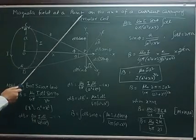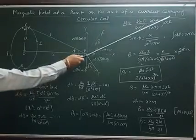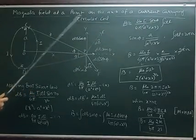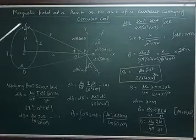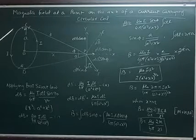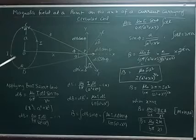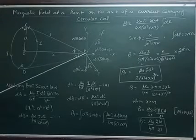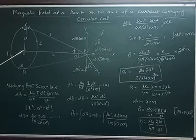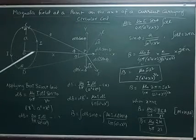Magnetic field at a point on the axis of a current carrying circular coil. Here is a current carrying circular coil placed along the Y-Z plane, and we have to calculate the magnetic field at point P at a distance X from the center of the coil along the X direction.